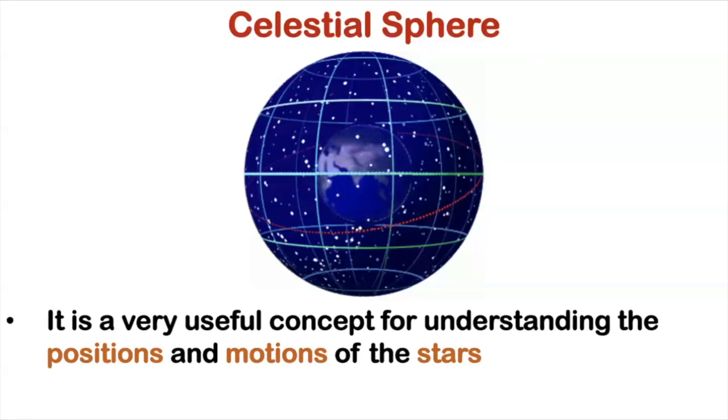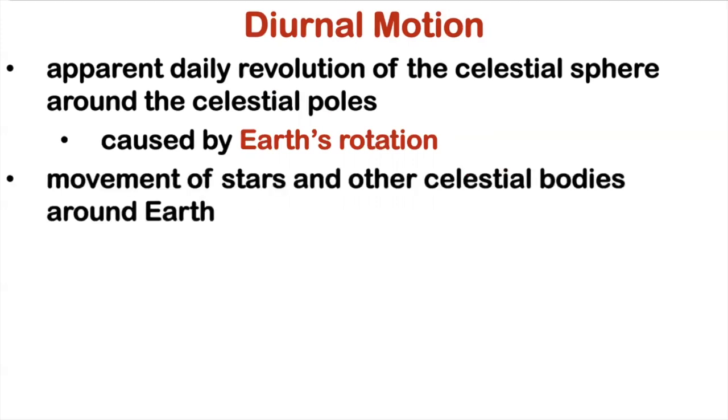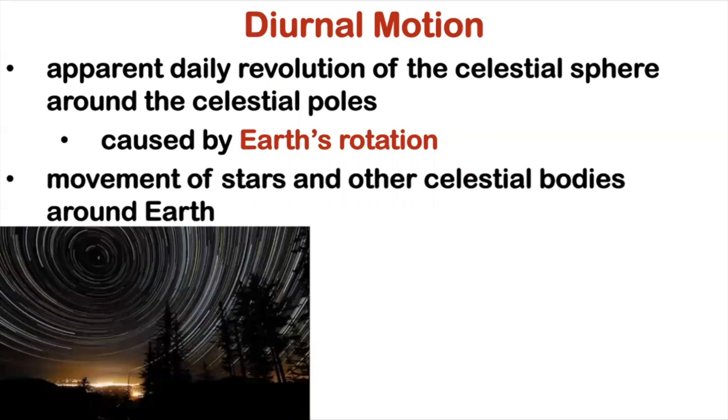Let's start with the diurnal motion. This refers to the apparent daily revolution of the celestial sphere around celestial poles, which is caused by the Earth's rotation. So essentially, it describes the apparent movement of stars and other celestial bodies around the Earth. You have probably seen pictures of this on the internet. So if you have seen this, that is the diurnal motion.